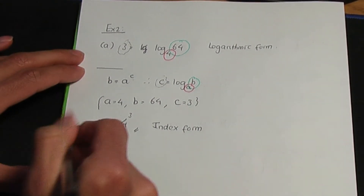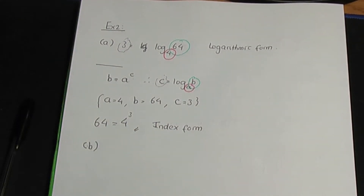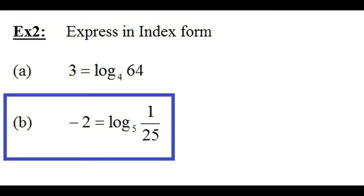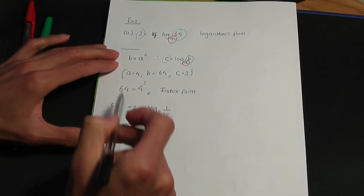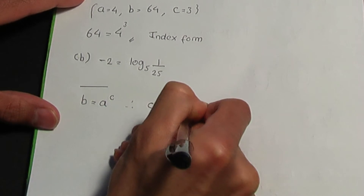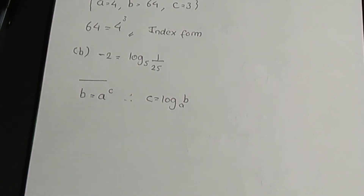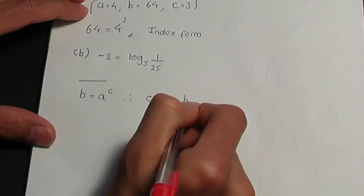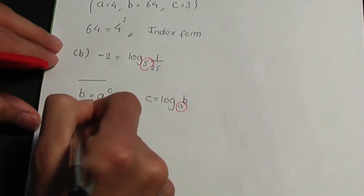That completes example two part a. Example two part b: we have to rewrite this equation, currently in logarithmic form, in index form. Minus two is log of one over 25, to the base of five. Back to the paper and pen. Let me jot down the relation: b equals a to the c, that means c is log b to the base of a. Let's have a quick comparison to figure out a, b and c. If I compare the equation in logarithmic form with the part of the relation in logarithmic form, we can note that a is five.